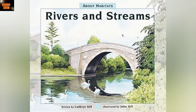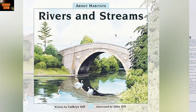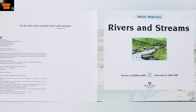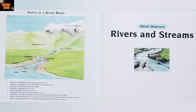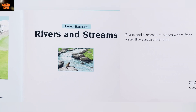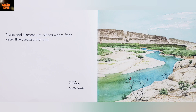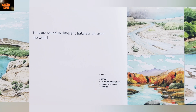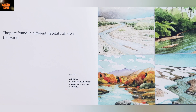Hi friends. Today we're going to read Rivers and Streams. Rivers and streams are places where fresh water flows across the land. They are found in different habitats all over the world.